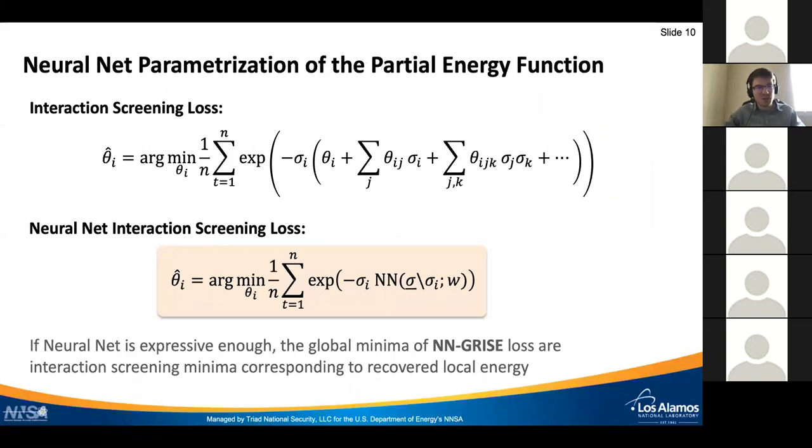This is where the proposal of using neural net parametrization comes into play. The suggestion is, if you compare the two loss functions written here, to use the nonlinear representation power of neural networks and their ability to approximate functions, and replace this local energy function modulo the central variable sigma i by a neural network representation. One can show that if the neural net is expressive enough, meaning that in terms of function approximation it contains this local energy function we want to reconstruct in its hypothesis space, then the global minimum of this neural net based GRISE estimator will correspond to the recovered local energy.